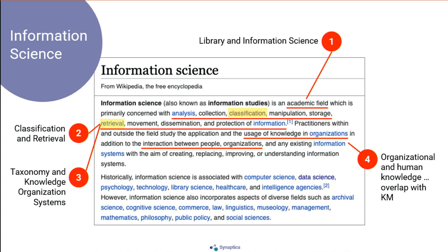Information science comes out of a library background — it's fairly academic. It's to do with classification and retrieval of information, and a mechanism for doing that is taxonomy and knowledge organization systems.